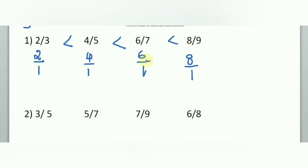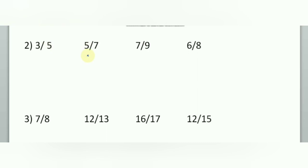There is an additional shortcut: when the difference between numerator and denominator is 1 for all fractions, you don't even need to write the converted form. You can directly find the highest value based on the numerator alone — 8, 6, 4, 2 — and easily determine the order.